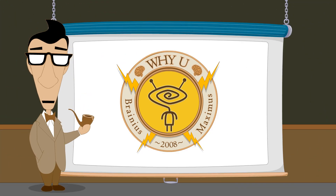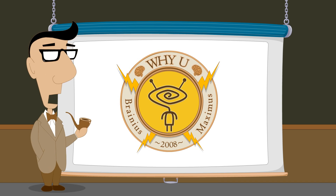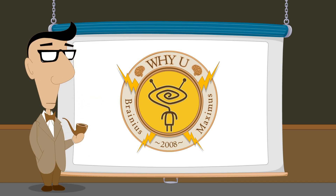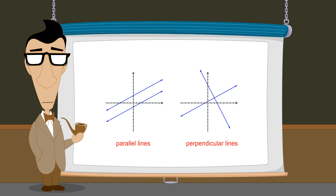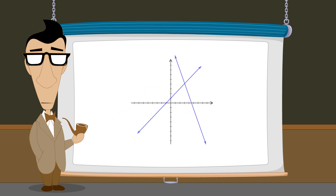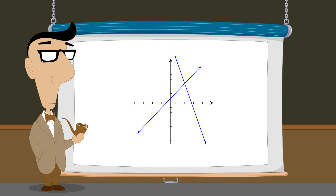Hello, I'm Professor Von Schmohawk and welcome to Why U. So far, we have seen several types of geometric relationships that can exist when two linear equations are simultaneously graphed. The points of intersection of two graphs have a special significance since the intersection points represent common solutions to both equations.